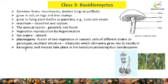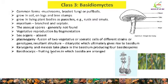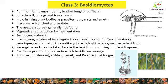Karyogamy is the fusion of two nuclei — karyon means nucleus. Karyogamy and meiosis take place in the basidium, producing four basidiospores. As the name of the class is Basidiomycetes, basidiocarps are produced — these are the fruiting bodies in which basidia are arranged. A common example of Basidiomycetes is Agaricus, commonly known as mushroom, which is edible.